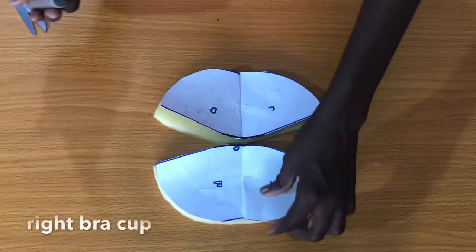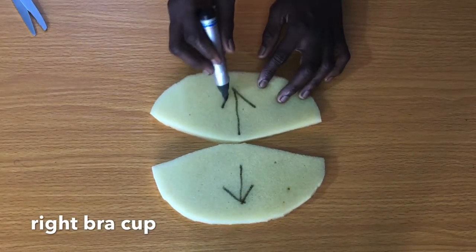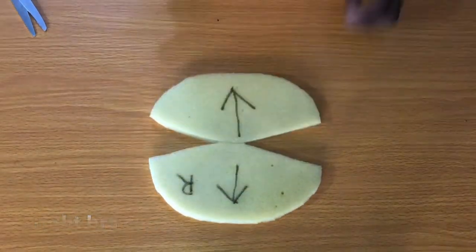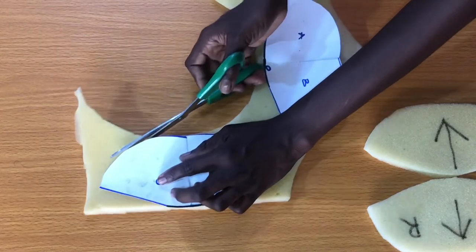Now I will label this cup as right cup and this is the upper part and this is the lower part of the bra cup. Now I will place the second template on the foam to trim out the left bra cup.